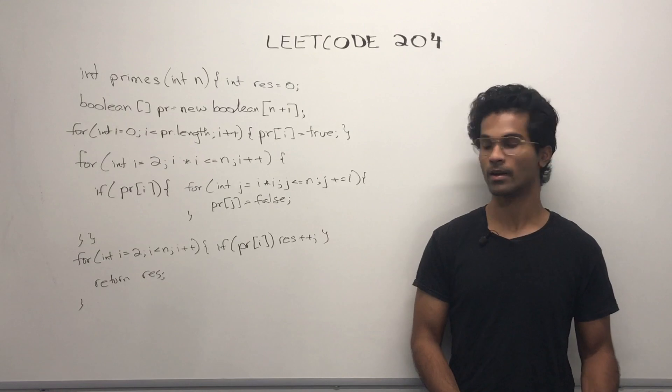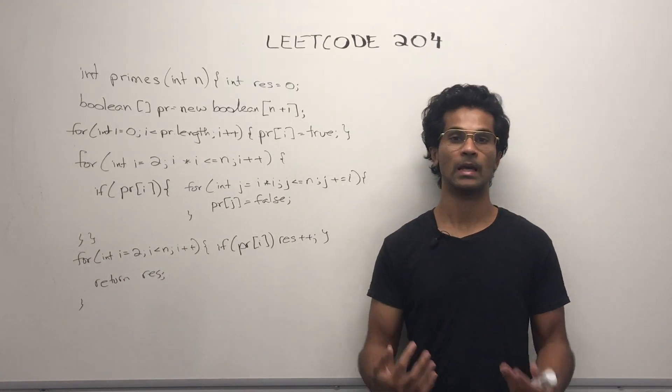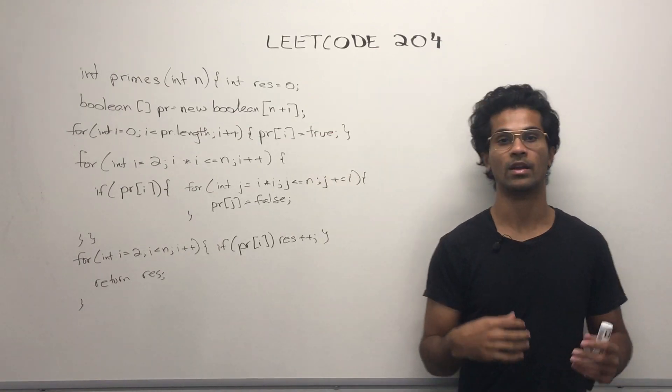Ultimately, when everything is done, we loop through our array and if it's still true, then we're going to increment our counter and return the result.